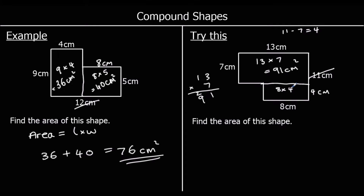And eight times four is 32 centimetres squared. So the total area is 91 plus 32, which is 123 centimetres squared.